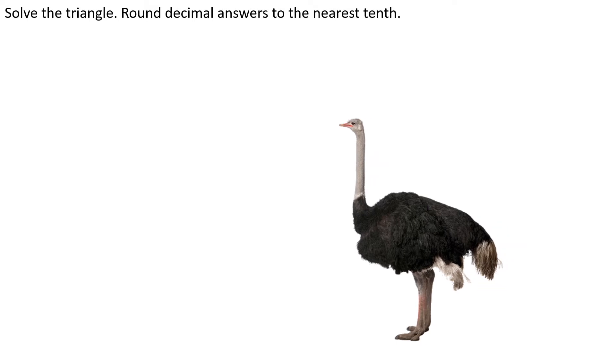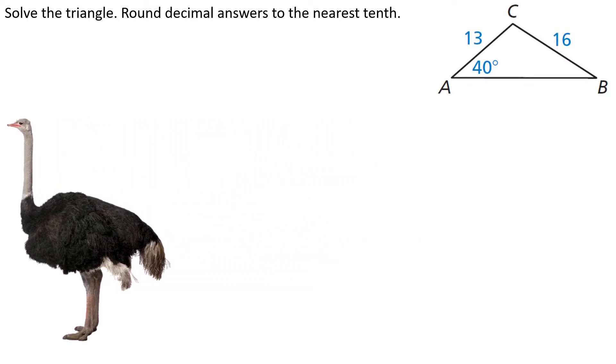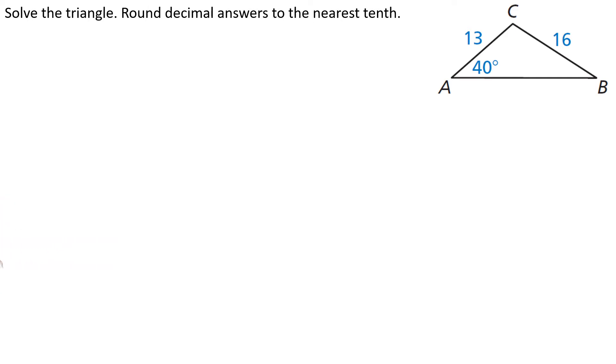So let's solve this triangle. It must be in Africa. There goes an ostrich. Okay, what should we do first? Well, let's take stock of what we know. We know angle A. We know side A. We know side B. Well, I guess angle B is where we got to go, right? That's the one piece I don't have.